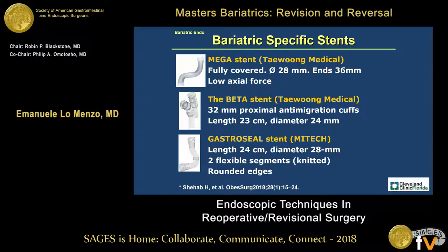Three examples of bariatric-specific stents: The Mega Stent is a fully covered stent with a 28 mm diameter and 36 mm at the ends to decrease migration. The Beta Stent has several cuffs to decrease the chance of migration, with an overall length of 23 cm and diameter of 24 mm. Finally, the Gastrocyl Stent is longer and wider, with coverage at the distal end because it's meant to go into the duodenum to decrease ulcers and erosions.